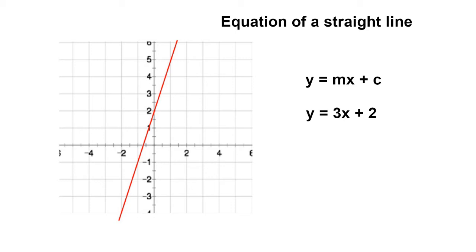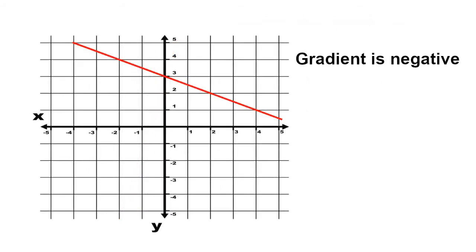So we've considered the gradient of a straight line graph when the gradient is positive — it's running from left to right uphill. In this instance, we can see that the line runs from left to right going downhill. Therefore, the gradient is going to be negative. But we work out the gradient in much the same way — we divide how far we've gone up by how far we've gone along, and that will give us our gradient.